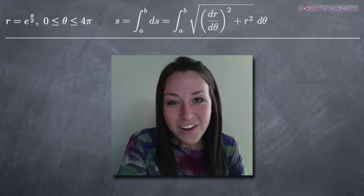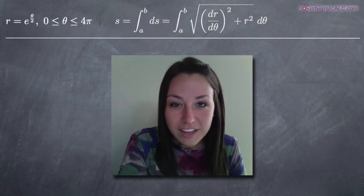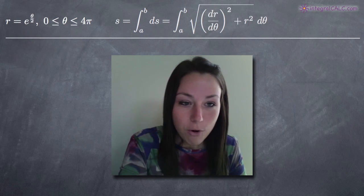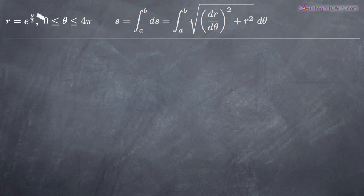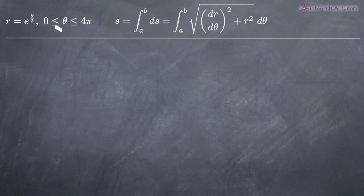Welcome back to integralcalc.com. Today we're going to be talking about how to find the arc length of a polar parametric curve. In this case we have a polar parametric curve defined as r equals e to the theta over two, or one half theta. And we've been asked to find the arc length associated with that parametric curve when theta is between zero and four pi.